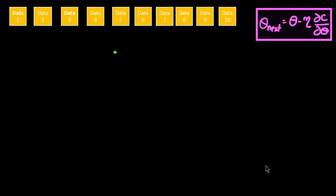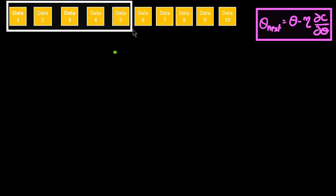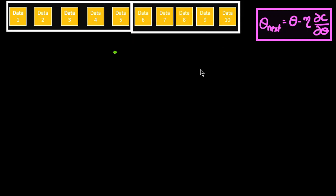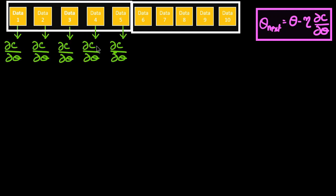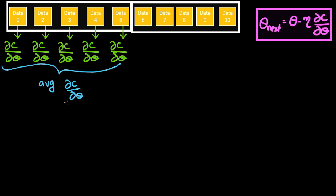In mini batch gradient descent, we group the data into different batches. Suppose we have 10 data points — we group five into the first batch and the remaining five into the second batch. We take the first batch, find the derivative ∂C/∂theta for all five samples in the batch, and then take the average of those derivatives.